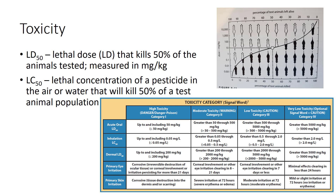Toxicity is the general term used to describe the potential for a chemical to cause harm. Toxicity is commonly measured by the lethal dose, LD, that kills 50% of the animals tested — the LD50. LD50 is expressed as milligrams of active ingredient of pesticide per kilogram of body weight of the test animal, milligrams per kilogram.